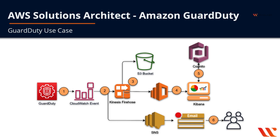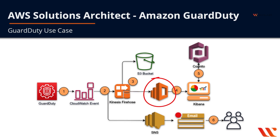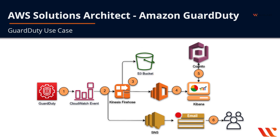You could augment this use case by filtering and formatting the findings using a Lambda function — for example, sending only high severity items with a severity greater than seven. In step three, the Firehose stream delivers findings to an Elasticsearch domain for visualization and analysis, and also delivers findings to an S3 bucket for long-term archiving. This data can augment your data lake and you can use services such as Athena to perform advanced analytics on it.